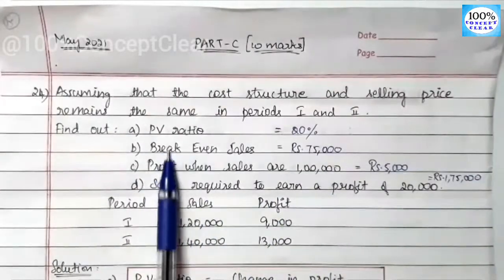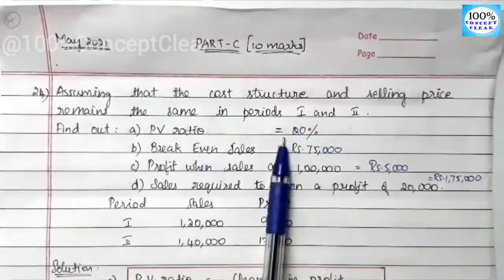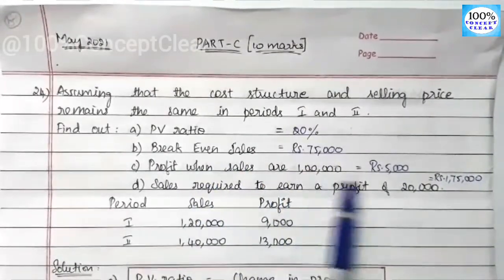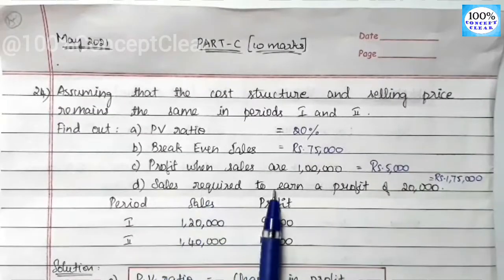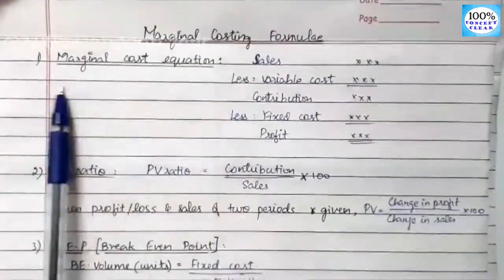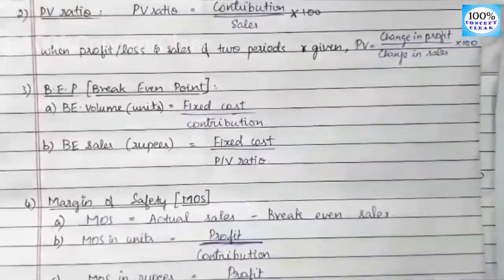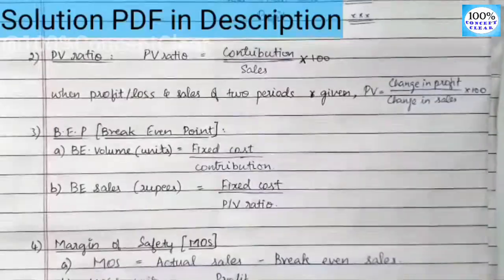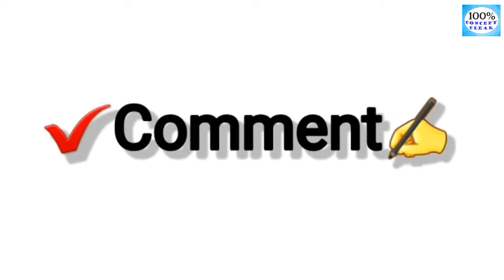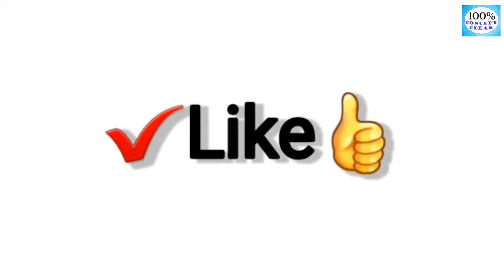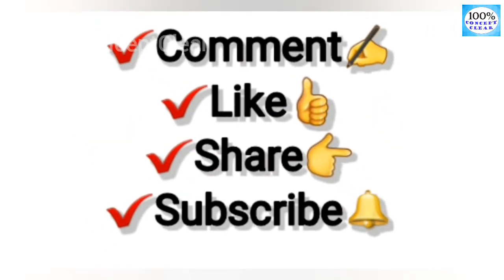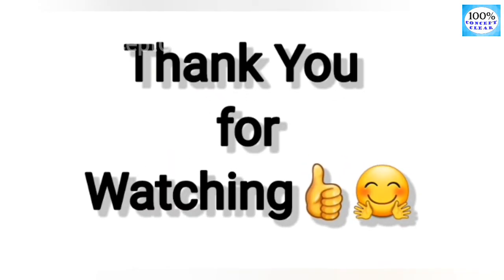To summarize all answers: A — PV ratio is 20%; B — Break-even sales is Rs.75,000; C — Profit when sales are 1 lakh is Rs.5,000; D — Sales required to earn a profit of 20,000 is Rs.1,75,000. These are the key Marginal Costing formulas used in most sums. If you have any doubts, please like and share this video, and subscribe to our channel. Thank you for watching!